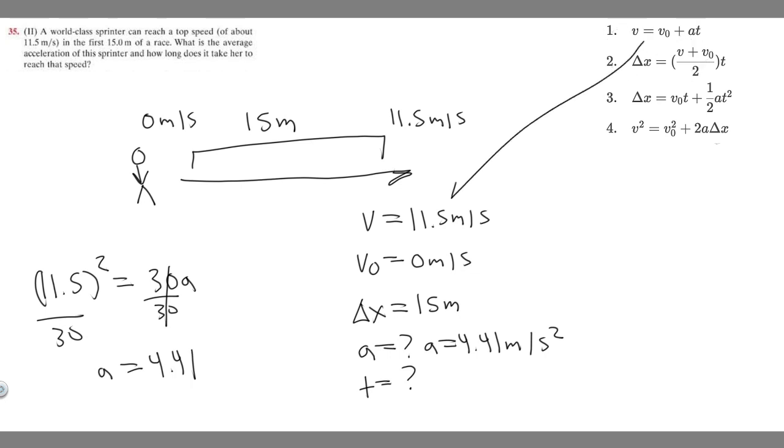So v which is 11.5 equals v sub zero which is just zero plus a which is 4.41 times t. So we're solving for t. It's going to be 11.5 equals 4.41t, so if we divide by 4.41 we'll find what t equals.